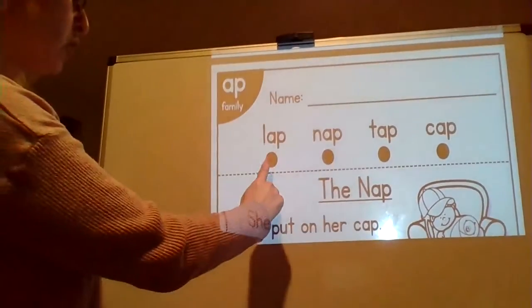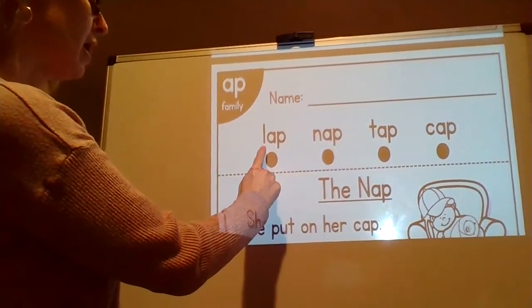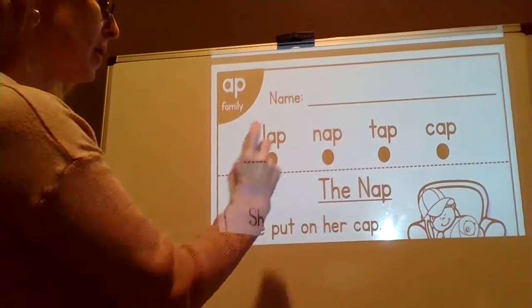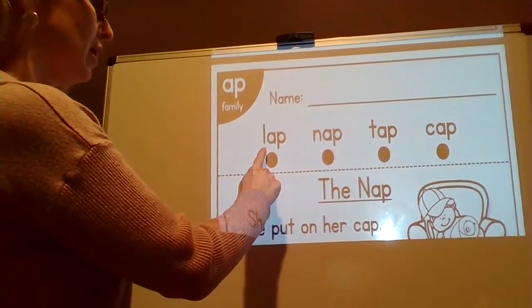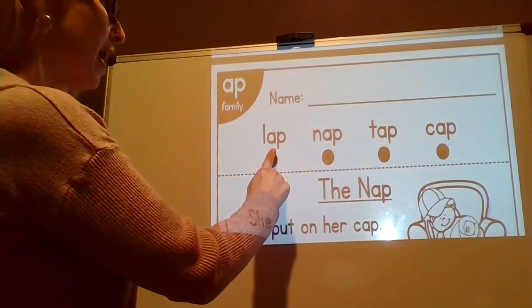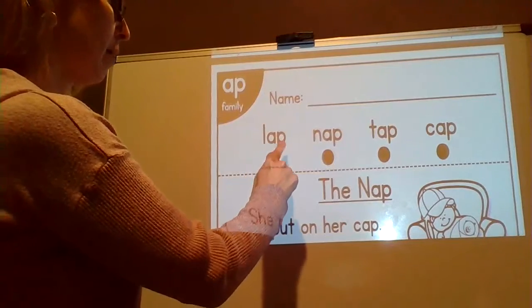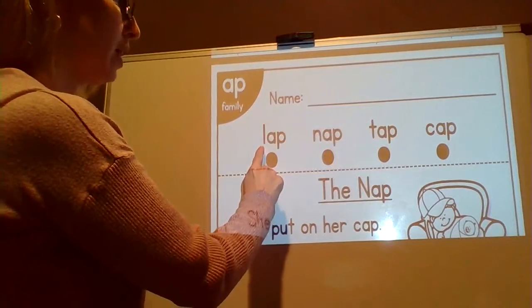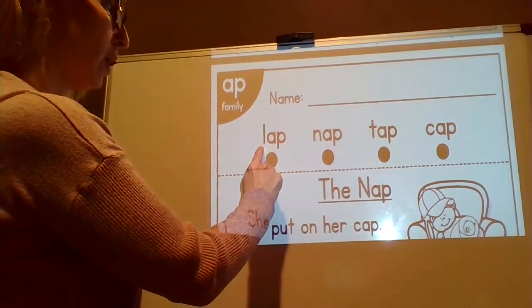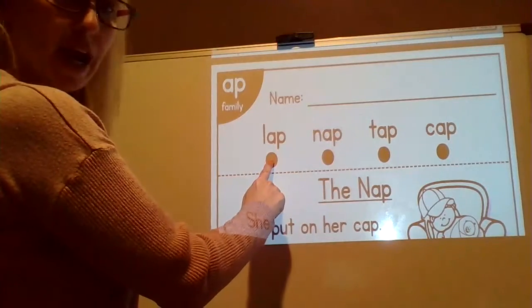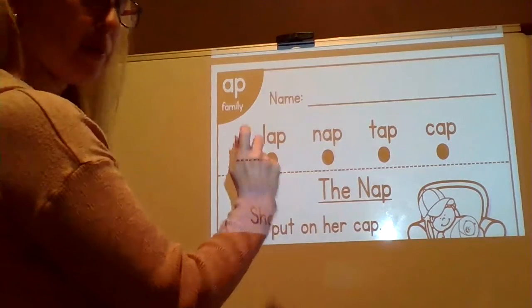Let's start with the first word. The sounds are L-A-P. Sound it out. Lap. Your turn. What word? Lap. The cat sat in my lap.